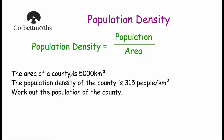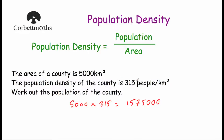Our next question says: the area of a county is 5,000 kilometres squared, and the population density of the county is 315 people per kilometre squared. Work out the population. One way to consider this: the county can be split into 5,000 one-kilometre-by-one-kilometre squares, and in each one of those squares there are 315 people. So we do 5,000 multiplied by 315, which gives us a population of 1,575,000.